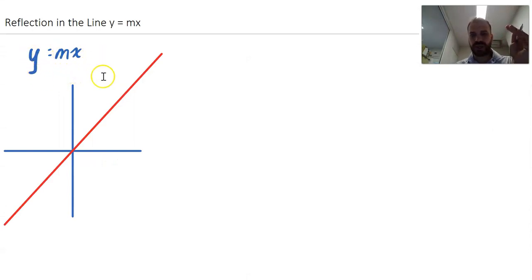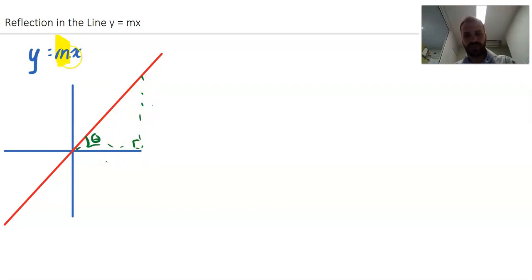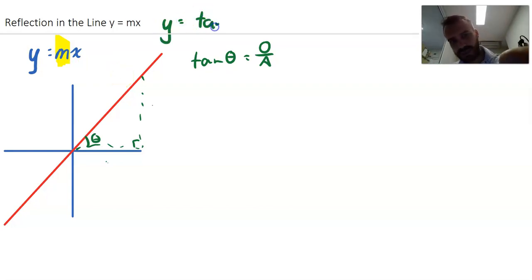Before we get into that, it's important to understand that y equals mx can be written in a different way. We focus on m — m is rise over run. By rise over run we mean the vertical and horizontal components. But it can also be thought of differently: there's an angle here, and this is opposite and this is adjacent. So we can think of the gradient as tan θ, because tan θ equals opposite over adjacent equals rise over run. Therefore y equals mx is actually y equals tan θ times x.